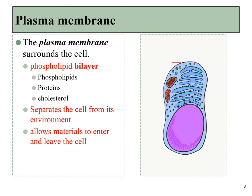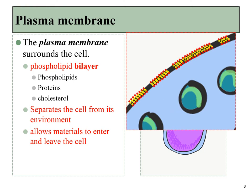The exterior border of every human cell is the plasma membrane, composed of a phospholipid bilayer. Phospholipids are small molecules with a polar head group and two nonpolar fatty acid tails. Found within this bilayer is cholesterol and proteins. Different proteins serve different functions in the plasma membrane, and as a whole the plasma membrane separates the inside of a cell from the outside and helps regulate what is able to get in and out.